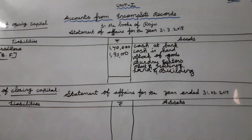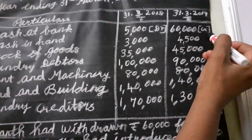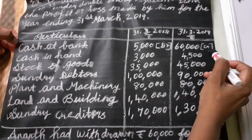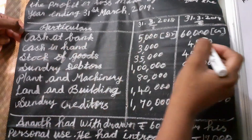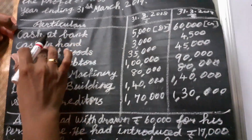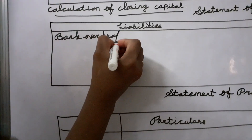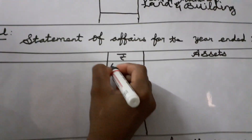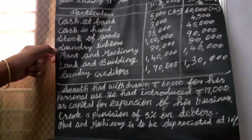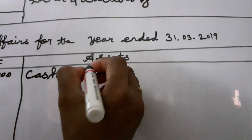Next, we want to find out the closing capital. See the question — cash at bank is given as a credit balance here. So we consider it as a bank overdraft. Because we do not have sufficient cash balance, instead of cash at bank we write bank overdraft of 60,000 on the liability side. Next, cash in hand is 4,500 — write that on the asset side.